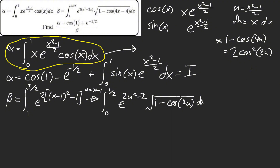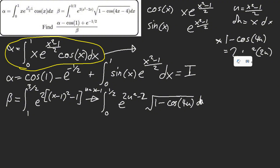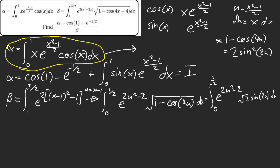Wait — this is incorrect! Why did I write this? Oh my god, this is sine squared — not what I had before. Oh my god. Ladies and gentlemen — this is zero to one half, this is e^(2u²-2), and the square root of two times sin(2u) du.